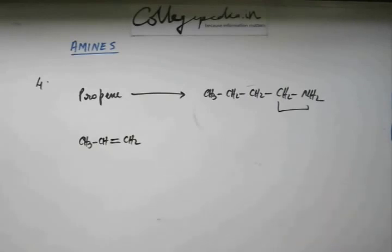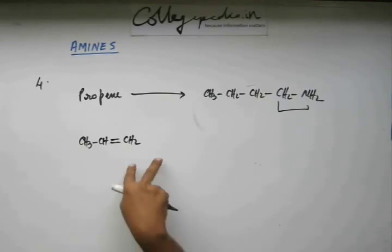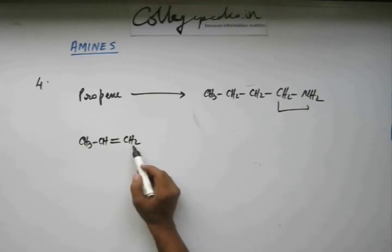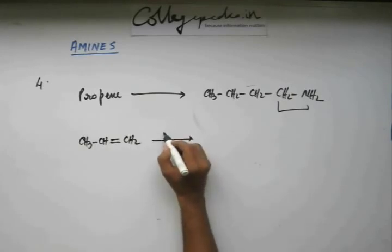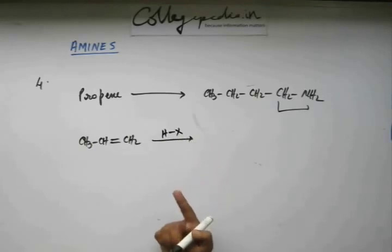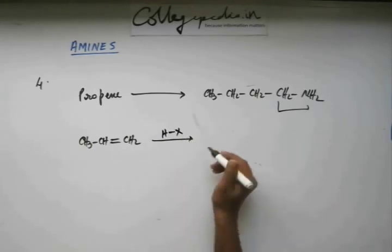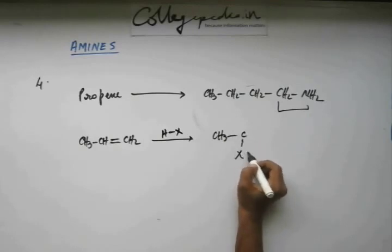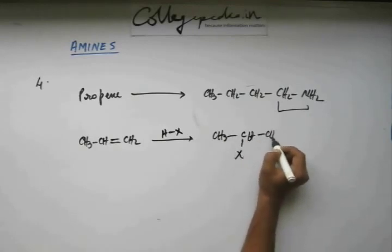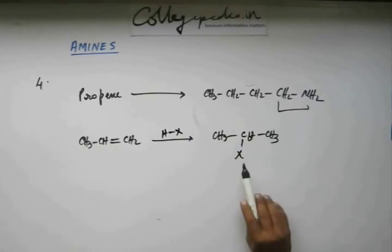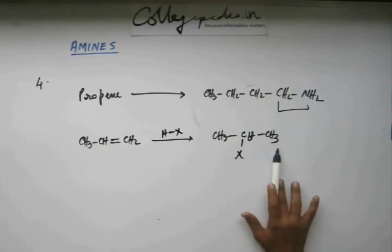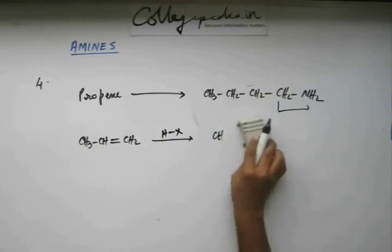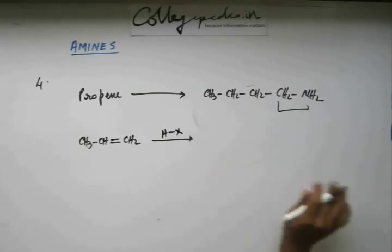So add CN and then you will get this. Now how to add CN? Develop a leaving group. How to develop a leaving group on this alkene? One way of developing this leaving group is addition of HCl or HBr. But I want the leaving group on terminal carbon. If you go for addition of HCl or HBr or HX, this will show Markovnikov addition. So the leaving group is going to appear on the second carbon. So now if you add CN, this CN will come on the second carbon and that will not work out because I want a straight chain.